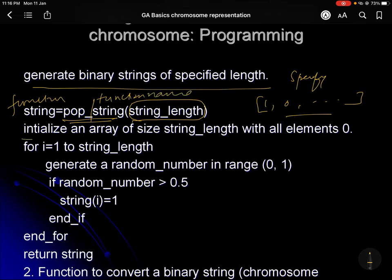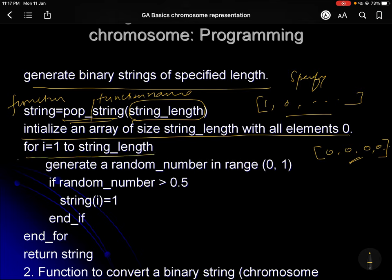The function name is pop_string. Step one is to initialize an array of size string length with all zeros. Then you count from one to the string length, generate a random number in the range zero to one. If that random number is greater than 0.5, that position becomes one; otherwise it remains zero. That is how a randomly generated chromosome or randomly generated individual in terms of chromosomes is created.